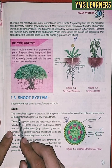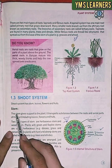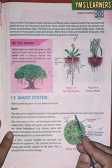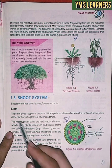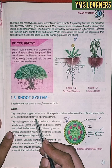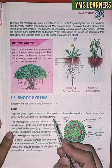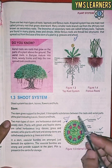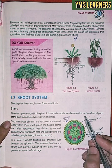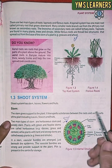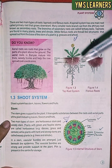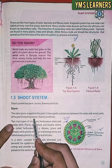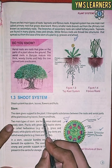The stem gives support to the plant. It transports substances between the roots and the aerial parts of the plant, including leaves, flowers, and fruits.